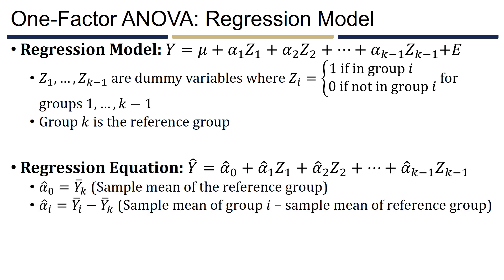The regression equation in one-factor ANOVA is easier to calculate than in multiple regression. y-hat equals alpha-naught-hat, which is always the sample mean of the reference group, plus alpha_1-hat times z_1 through alpha_{k-1}-hat times z_{k-1}. Each alpha_i-hat is calculated as the difference of sample means: y-bar_i minus y-bar_k, where y-bar_k is the sample mean of the reference group.